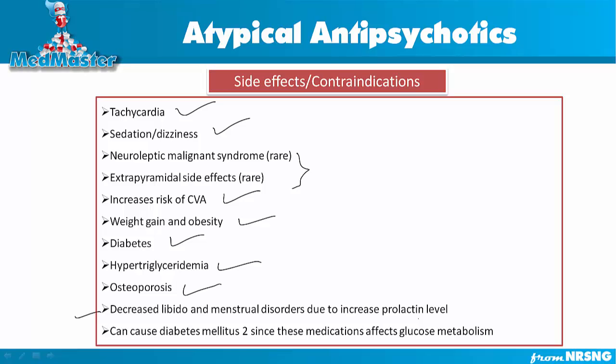One of the main side effects that causes many people — especially young people — to stop using this medication is decreased libido and menstrual disorders, due to increased prolactin levels. It can also cause diabetes mellitus because this medication increases insulin resistance and affects glucose metabolism.